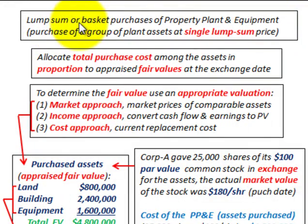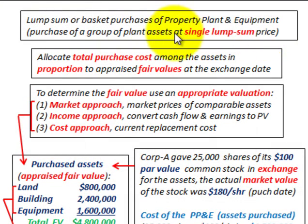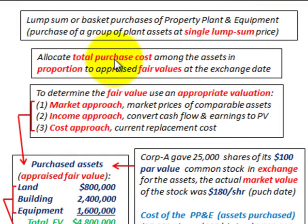What we're going to look at here is a lump sum or basket purchase of property, plant and equipment. This is a purchase of a group of plant assets at a single lump sum price. You're going to buy a group of assets and pay one total price for them. What we have to do is allocate the total purchase cost among the assets in proportion to the appraised fair values of the assets at the exchange date.